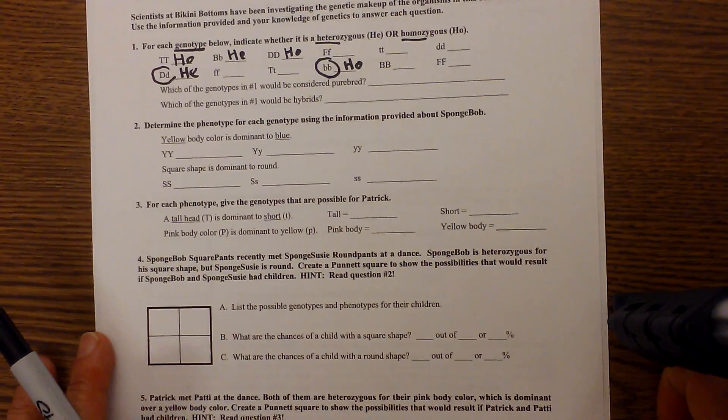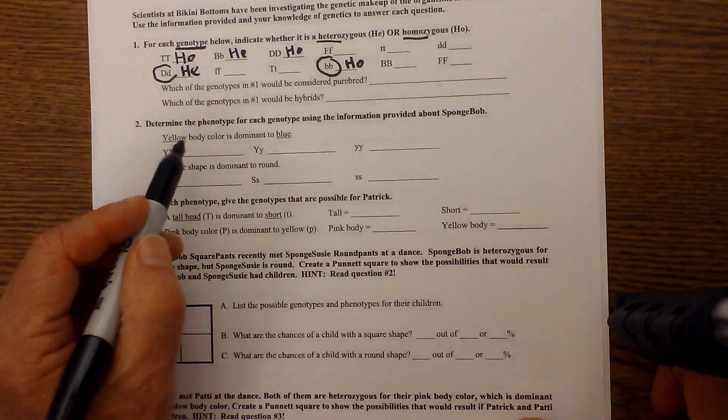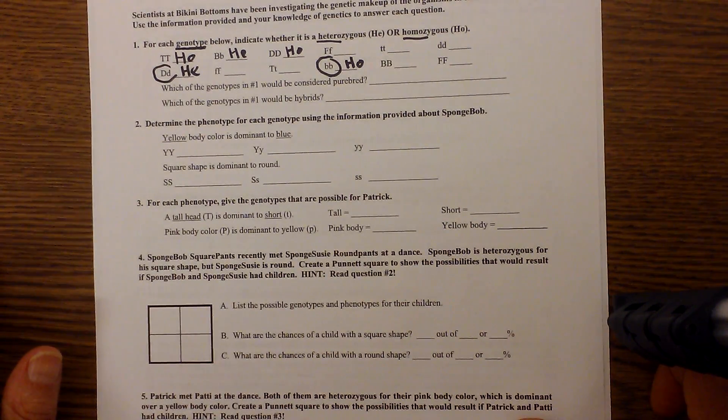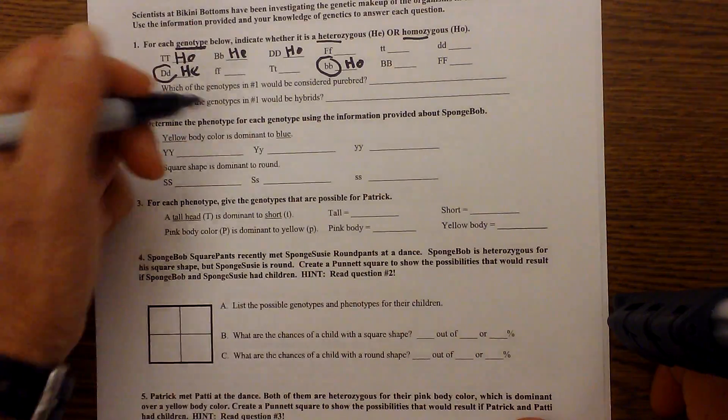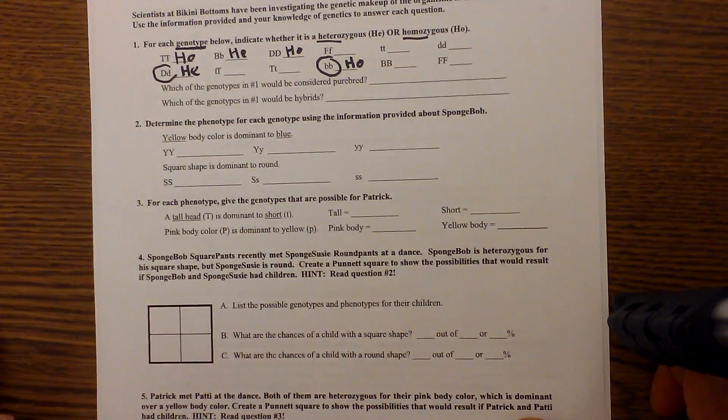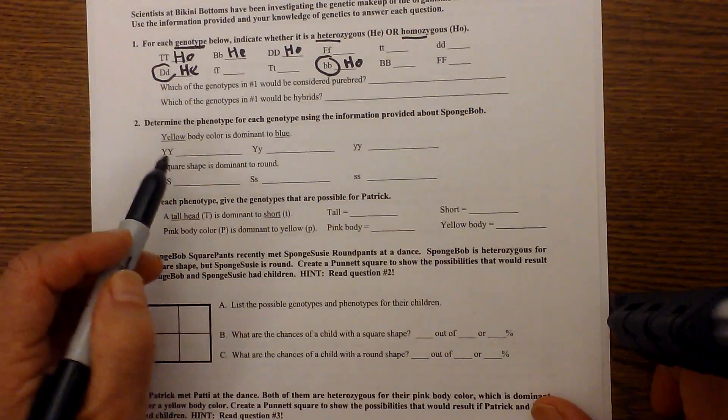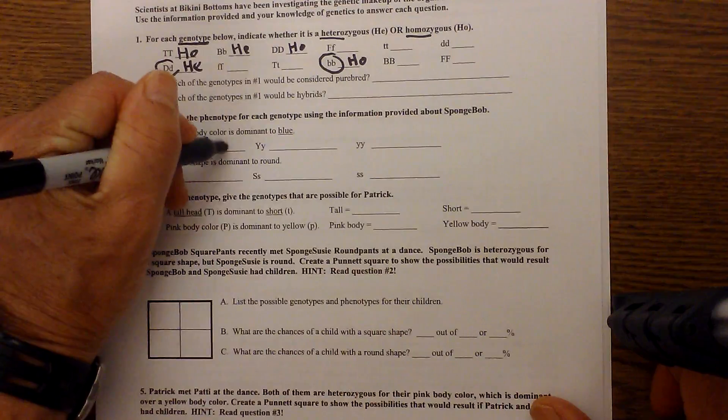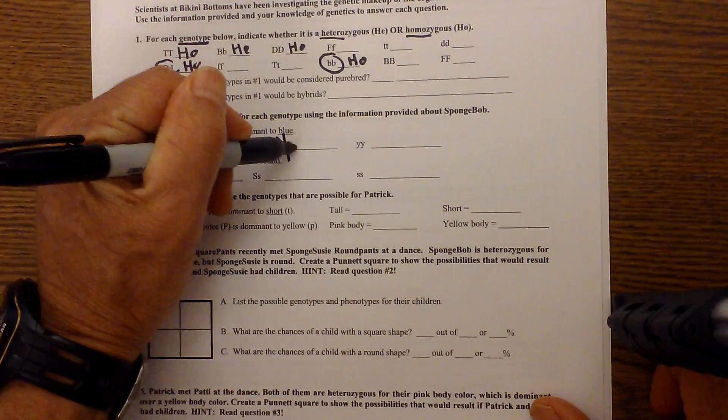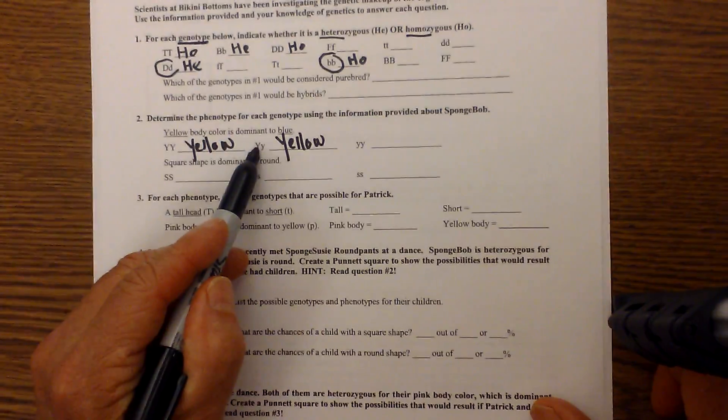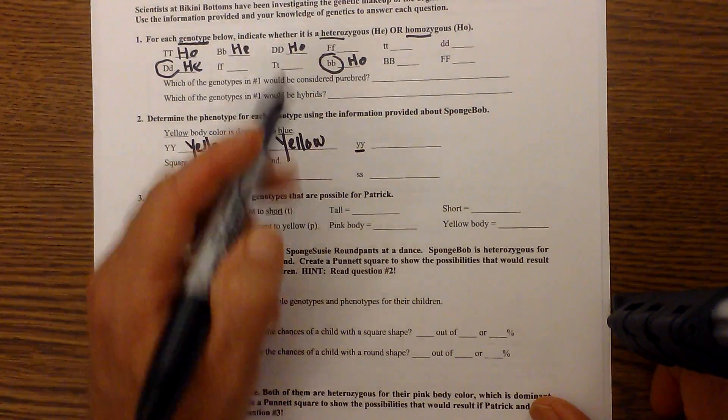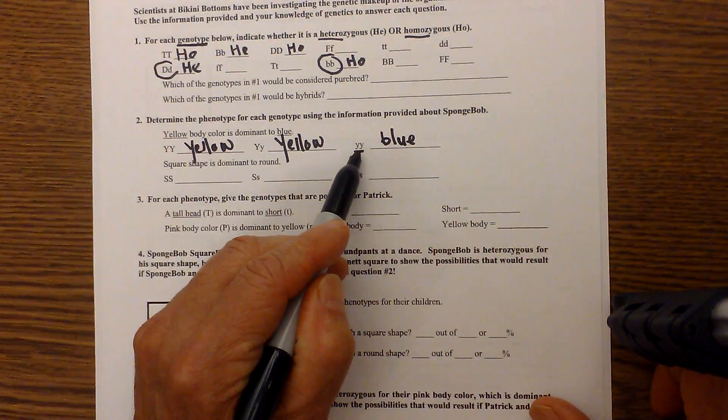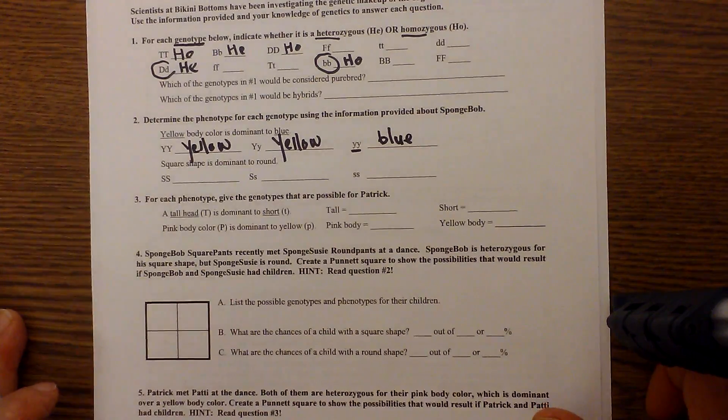Now let's apply this knowledge to one a little bit more challenging. It says yellow body is dominant to blue. Remember, dominant will show up any time you have a capital letter. A dominant is always written with a capital letter and recessive is written with a lowercase. So since yellow is dominant to blue, this will be yellow, capital Y, capital Y. And this will also be yellow because you have one capital letter. And then this will be blue because you have a homozygous for the recessive trait.